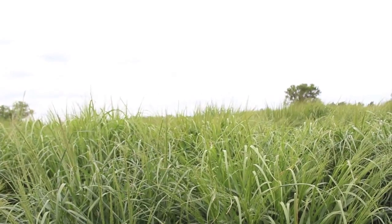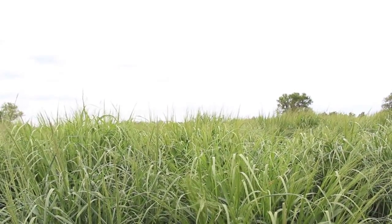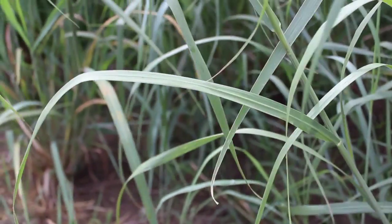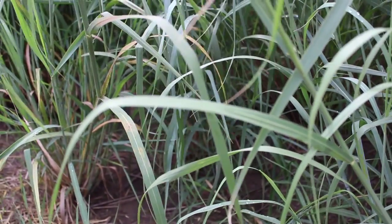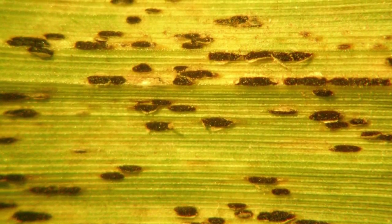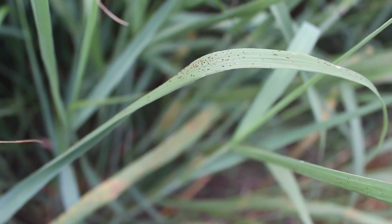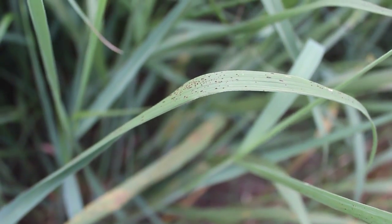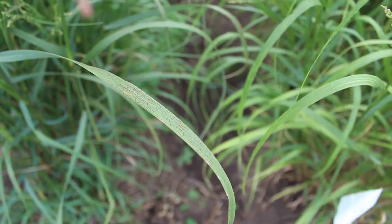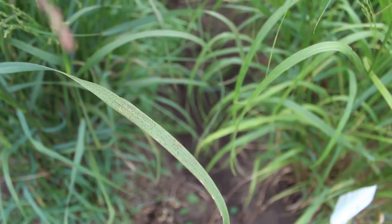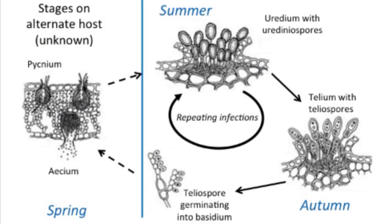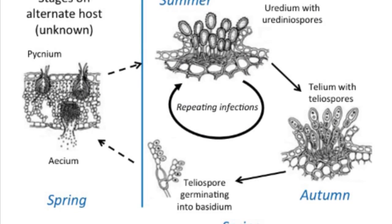Urediniospores are then released into the air to infect healthy switchgrass. This cycle can be repeated numerous times depending on the weather conditions. Beginning in mid-August, rust-infected switchgrass will begin to produce the black teliospore stage, changing the color of the pustules from rust red to coal black. Teliospores allow the fungus to survive harsh winter conditions in a dormant state. It is not yet known exactly how the switchgrass rust fungi transition from the teliospore stage to urediniospores in the following spring.